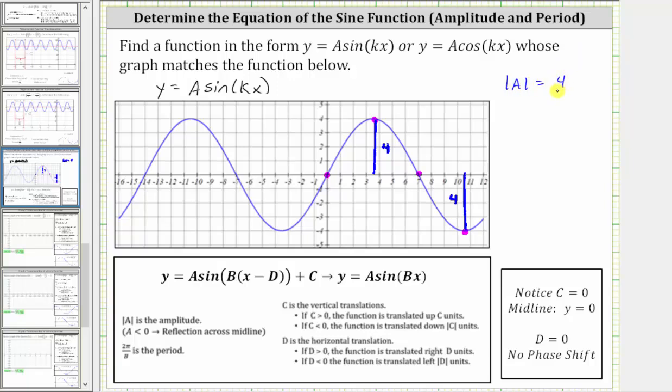And again, because we don't have a reflection across the midline, based upon the pattern of midline max, midline min, midline, a is equal to positive four.